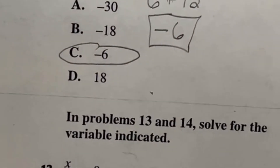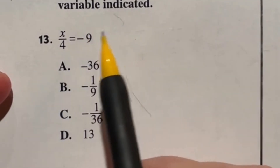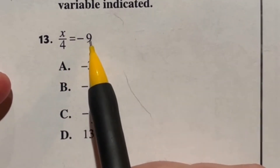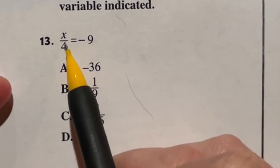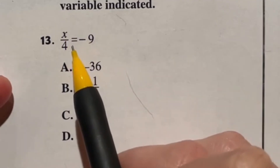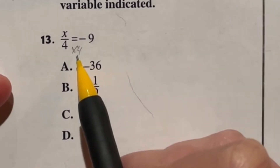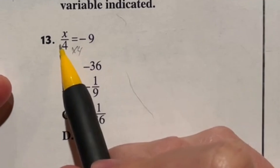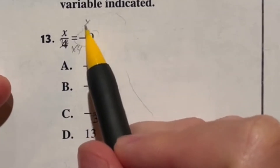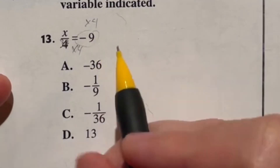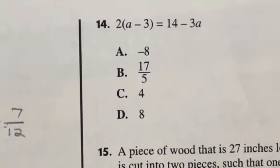Our next two problems, numbers 13 and 14, ask us to solve for the variable indicated. Number 13 says x divided by four is equal to negative nine. This is a one-step equation. Whenever you want to move a number away from x to get x by itself, you do the opposite function. Since we're dividing by four, the opposite is multiplying by four — and you have to do it to both sides. Negative nine times four gives you negative 36, which is our final answer, A.